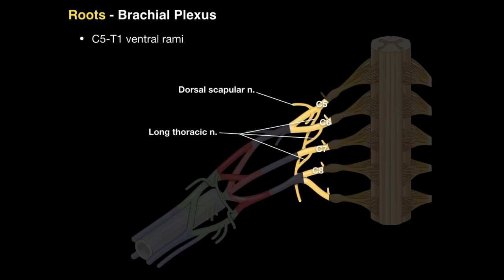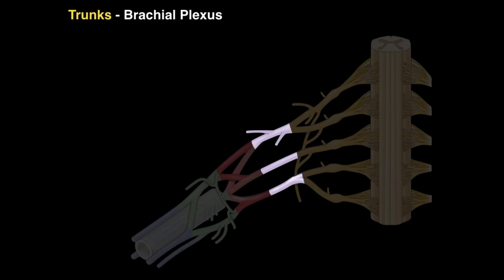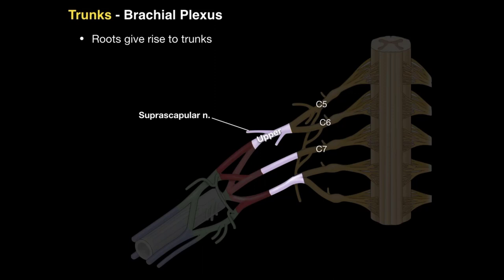There are also the C8 and T1 roots, which exit between the anterior and middle scalene muscles. These roots give rise to trunks: C5 and C6 come together to make the upper trunk, which gives off the suprascapular nerve innervating the supraspinatus and infraspinatus muscles. The C7 root continues to become the middle trunk, and C8 and T1 come together to make the lower trunk.